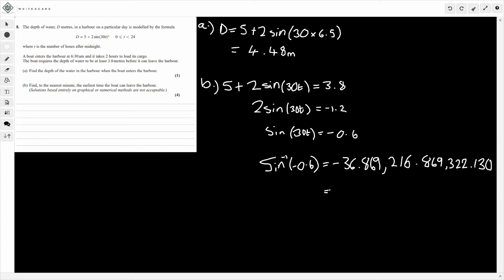So these are 30t. So 30t is equal to all of these values. So t, we're going to have to divide all of these by 30. So this one, the first one, will be minus 1.228. Well, straight away we can scrap that. Negative time, it isn't going to be the correct one. So that one, we don't want.